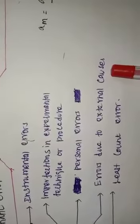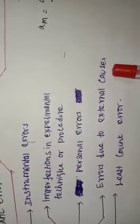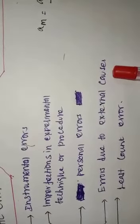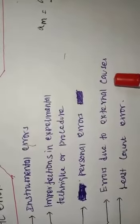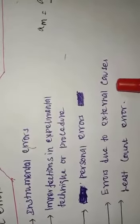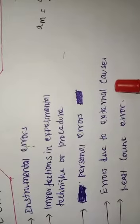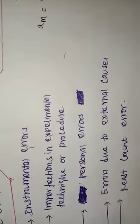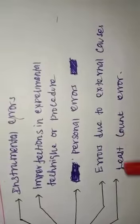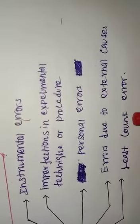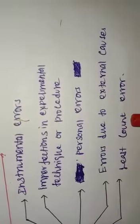Error due to external causes: external causes like change in temperature, humidity, or pressure during the measurement may affect the result of the measurement.